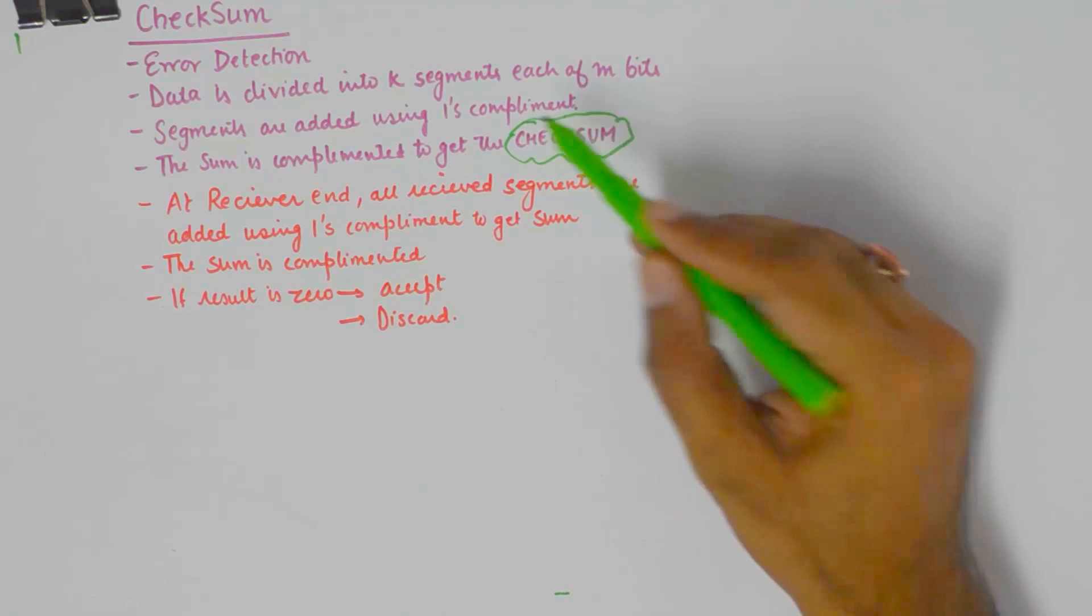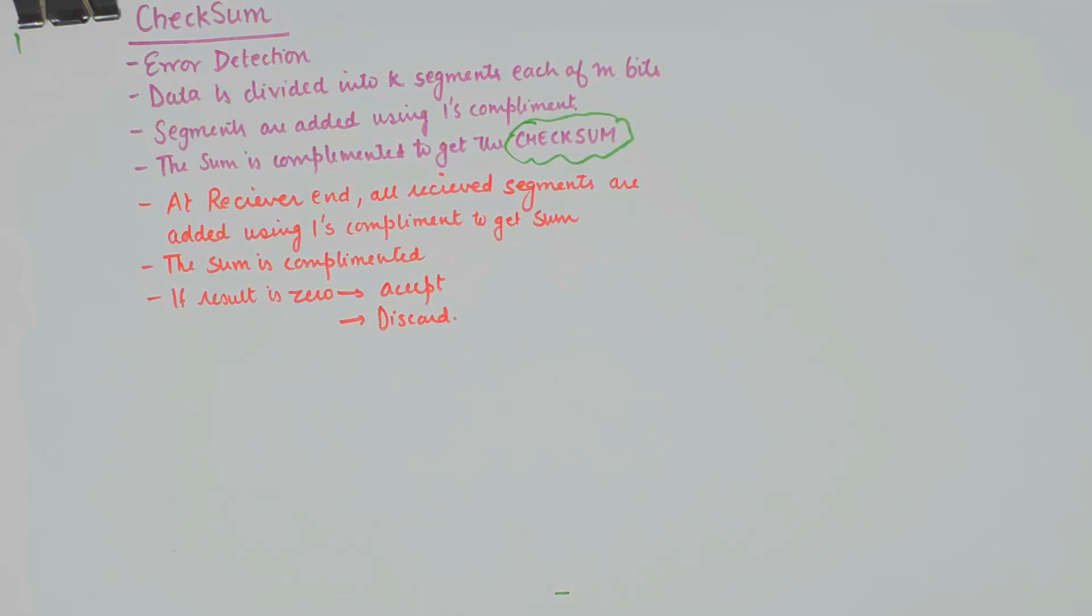This is what the algorithm of Checksum is. I will show you with an example what happens at the transmitter and then we will take up an example what happens at the receiver.